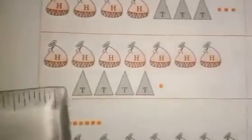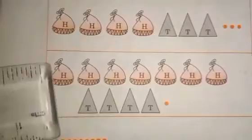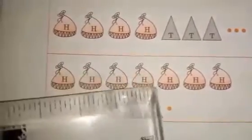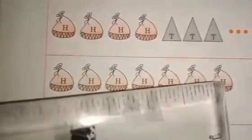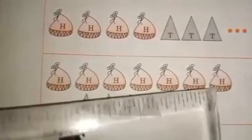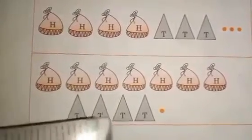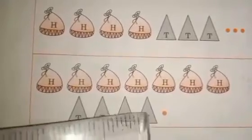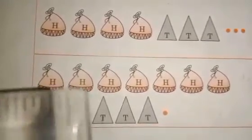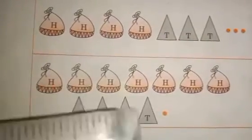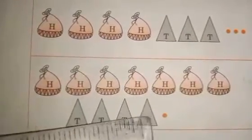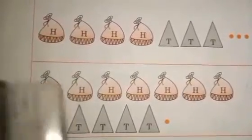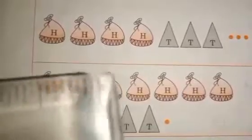Now look at the next one carefully. How many bags are there? Count: there are 7 bags — so 7 hundreds. How many triangles? There are 4 triangles — so 4 tens. And there is 1 single bead. So the answer is 741: 7, 4, 1.